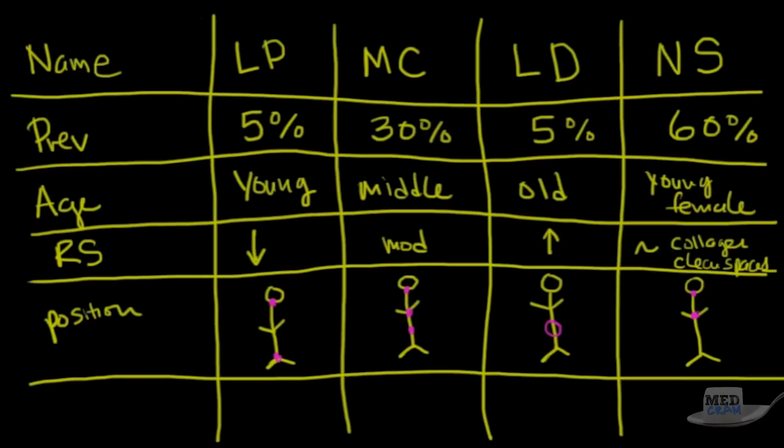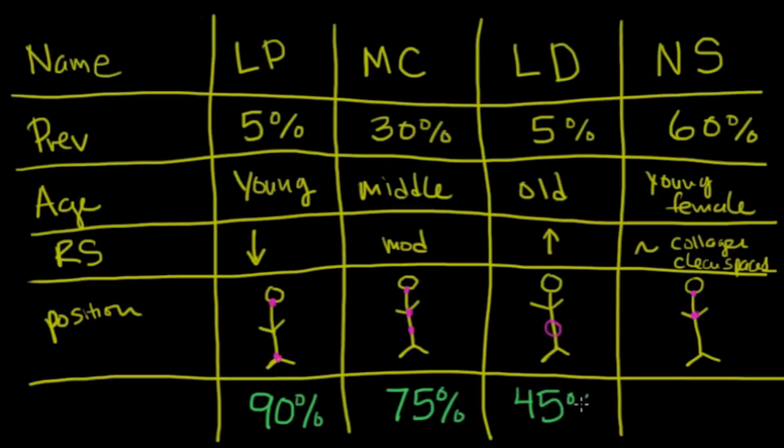Now, in terms of cure rates, interestingly, the lymphocyte predominant has a 90% cure rate, whereas the mixed cellularity has a 75% cure rate. By the way, these are better than the non-Hodgkin's. The lymphocyte depleted has the worst prognosis of all at only 45%, whereas the nodular sclerosis has a pretty good rate of about 85%.